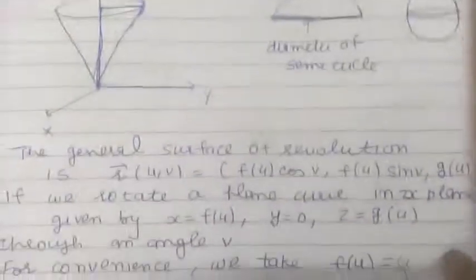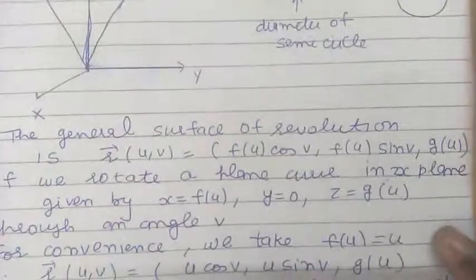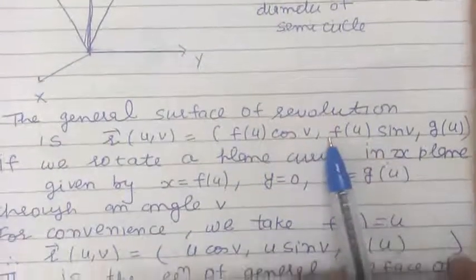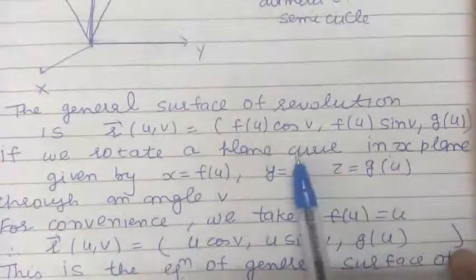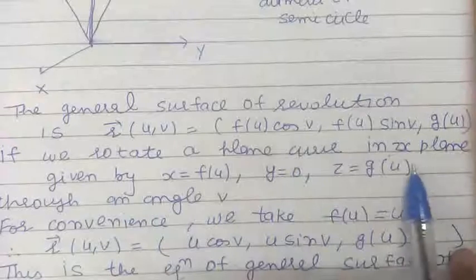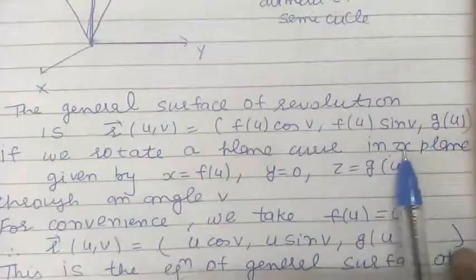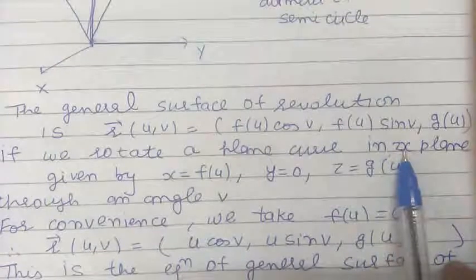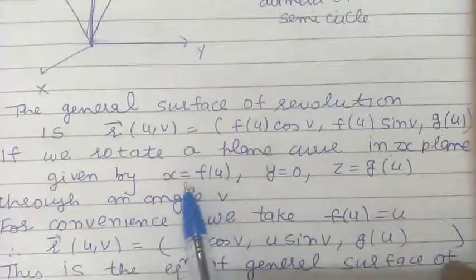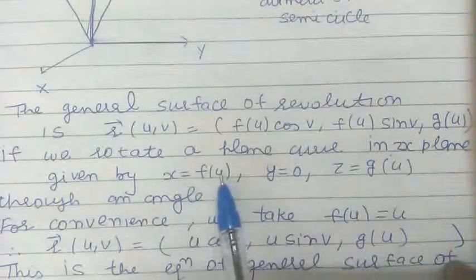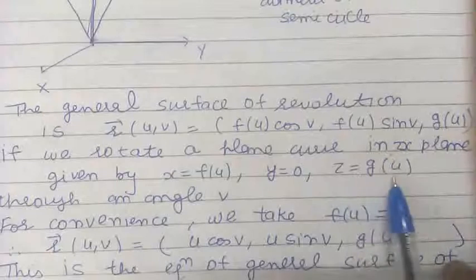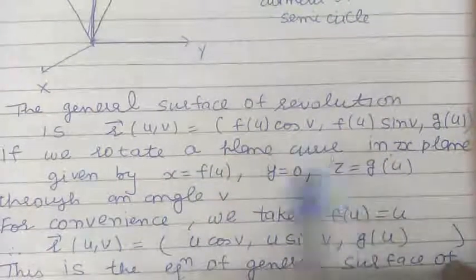Now, we will discuss the general equation of the surface of revolution. For this, let us take a plane curve in the zx plane. In the zx plane, because the y coordinate is 0, we can take a plane curve in the xz plane by the equations x = f(u), y = 0, and z = g(u).